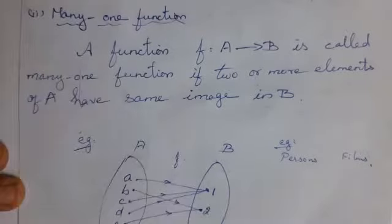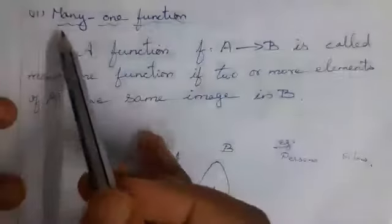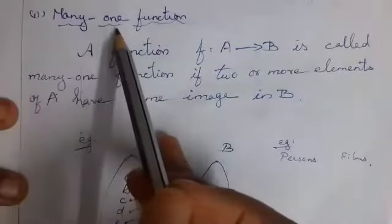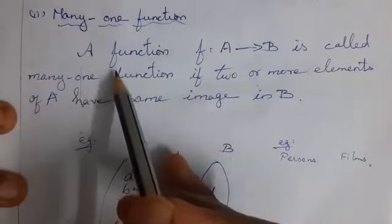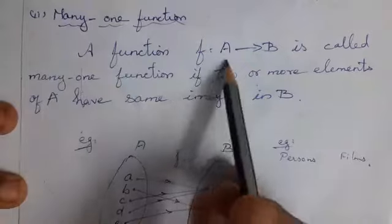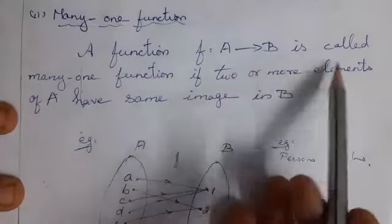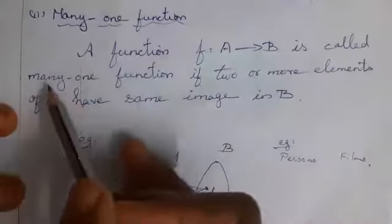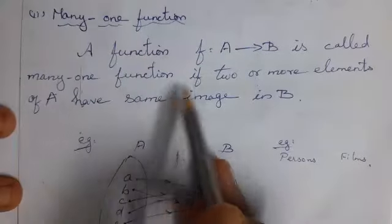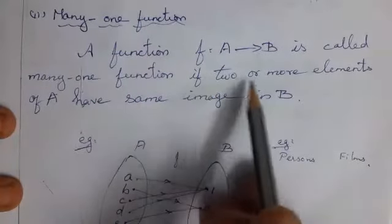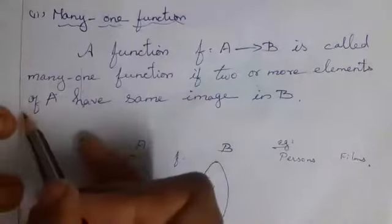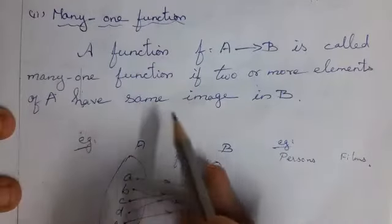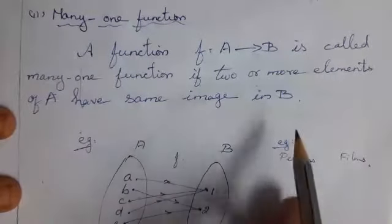Now see the second type: many-one function. A function f from A to B is called a many-one function if two or more elements of A have the same image in B.